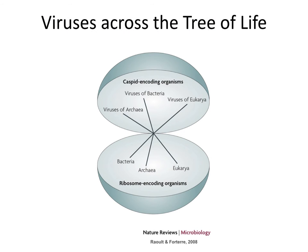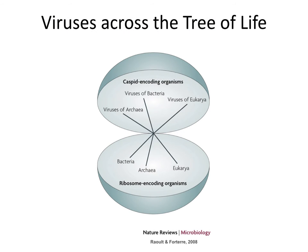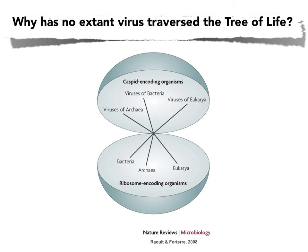I want to start with this intellectual question: if you're a virologist, you tend to appreciate that there are viruses of archaea, viruses of bacteria, and viruses of eukaryotes. Just as there are three cellular domains of life, there are really three types of viruses, each specific to those cellular domains. We know of no case where a virus has traversed more than one cellular domain of life. Why has no extant virus done the business of crossing and infecting more than one cell type? It would be a profound evolutionary advantage, but for that advantage there must be profound costs as well.